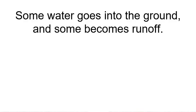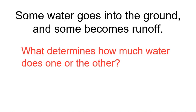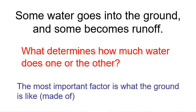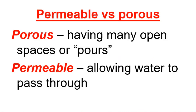Some water goes into the ground and some becomes runoff from every rainstorm, but what determines how much goes in and how much stays on top? The most important factor is what the ground is made out of. Here are two vocabulary terms that help determine how much water goes into the ground: porous means you have a lot of open spaces that water can fill up, and permeable means water can go into the material easily.